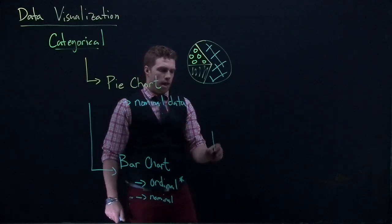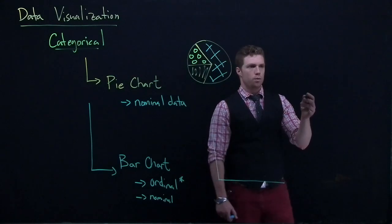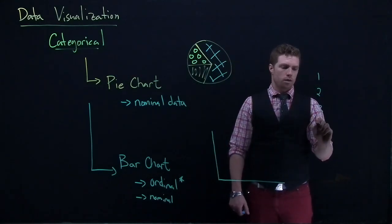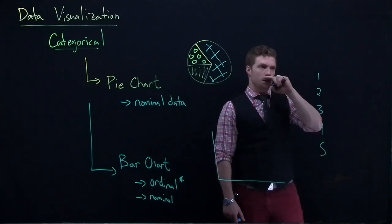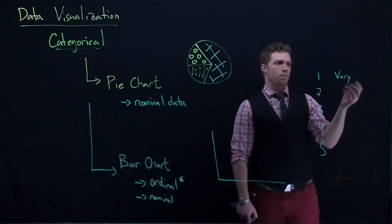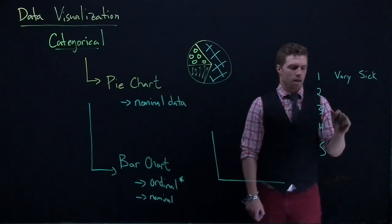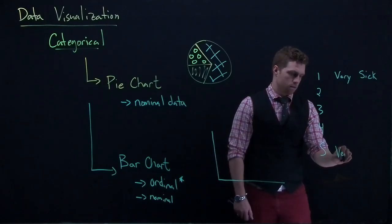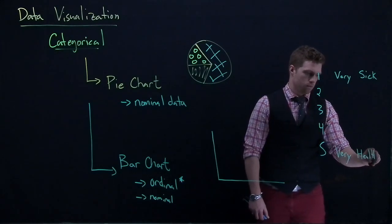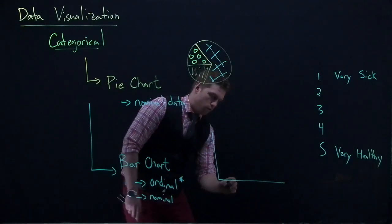Here's why. So with ordinal, let's say if we had a Likert scale. We'll do a scale from 1 to 5, so we don't have to do so much work. And this is, we'll say, very sick. And 5 is very healthy. And some scale. We could give some labels there as well. But I'm just going to go from here.